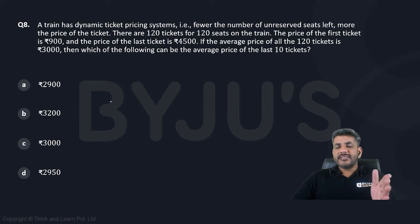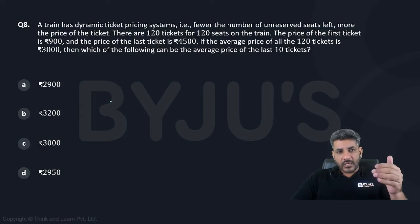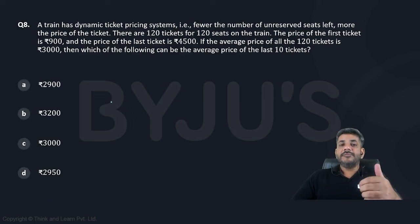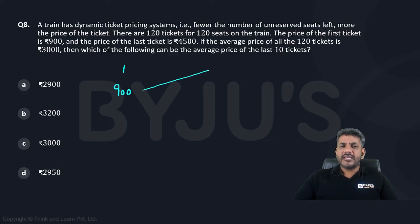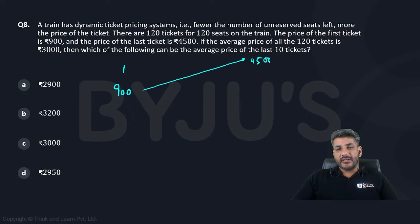Basically, as and when the number of seats decreases, the cost of the ticket keeps increasing. So for the first ticket the price is 900, for the second ticket the price is slightly more, the third ticket is again more, and it keeps increasing, and for the last ticket the price is 4500. So first is 900, the last is 4500.